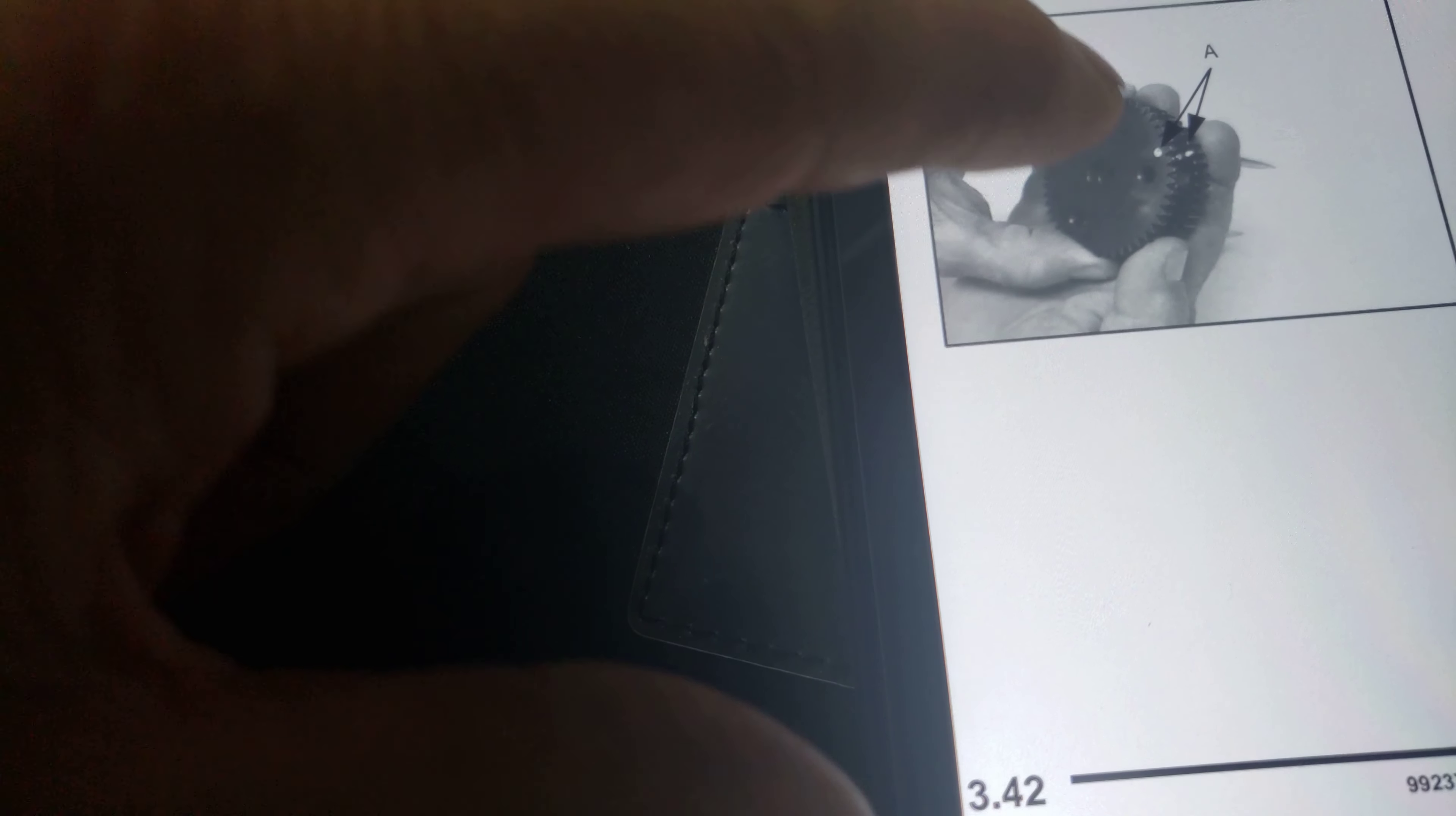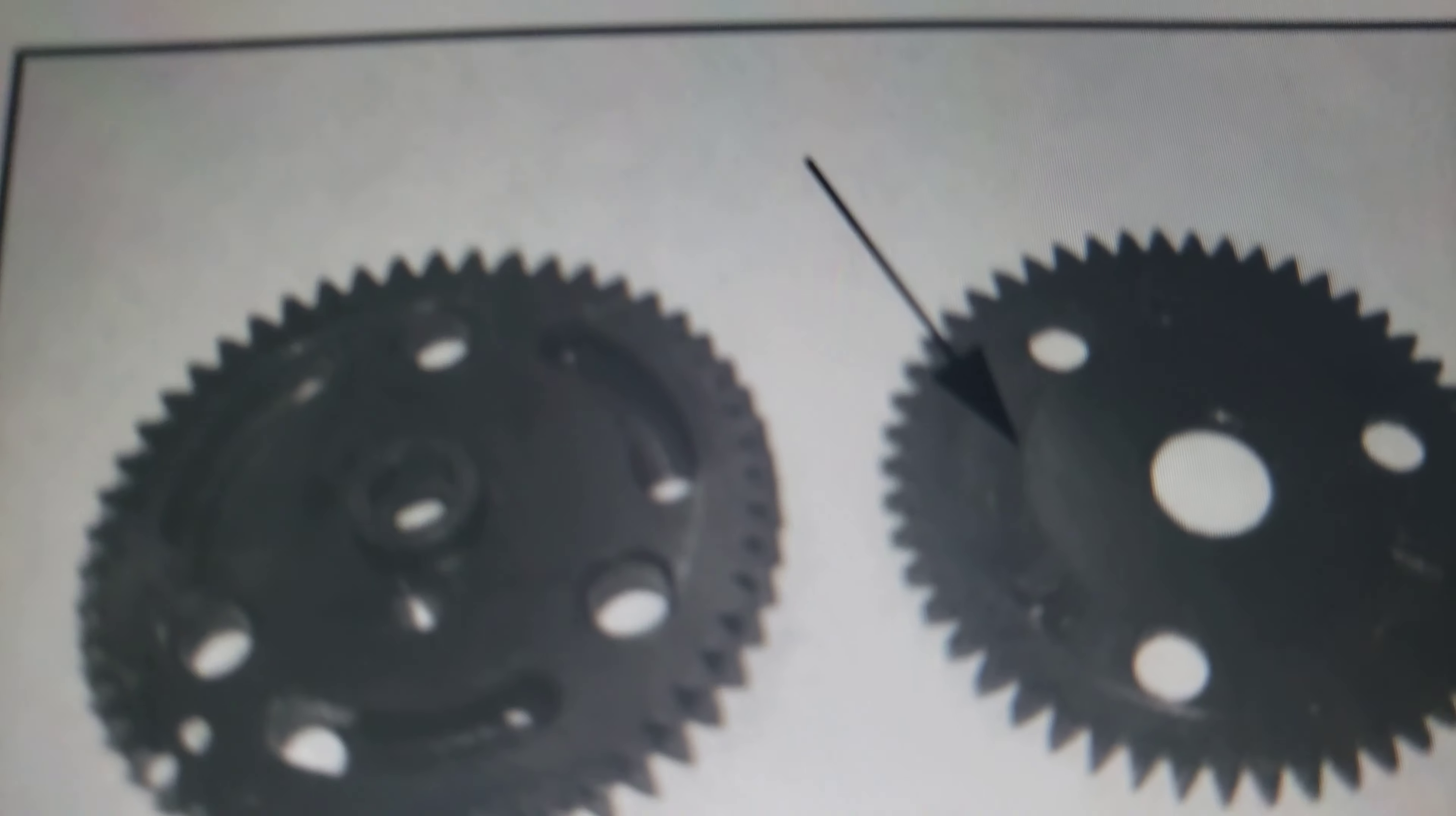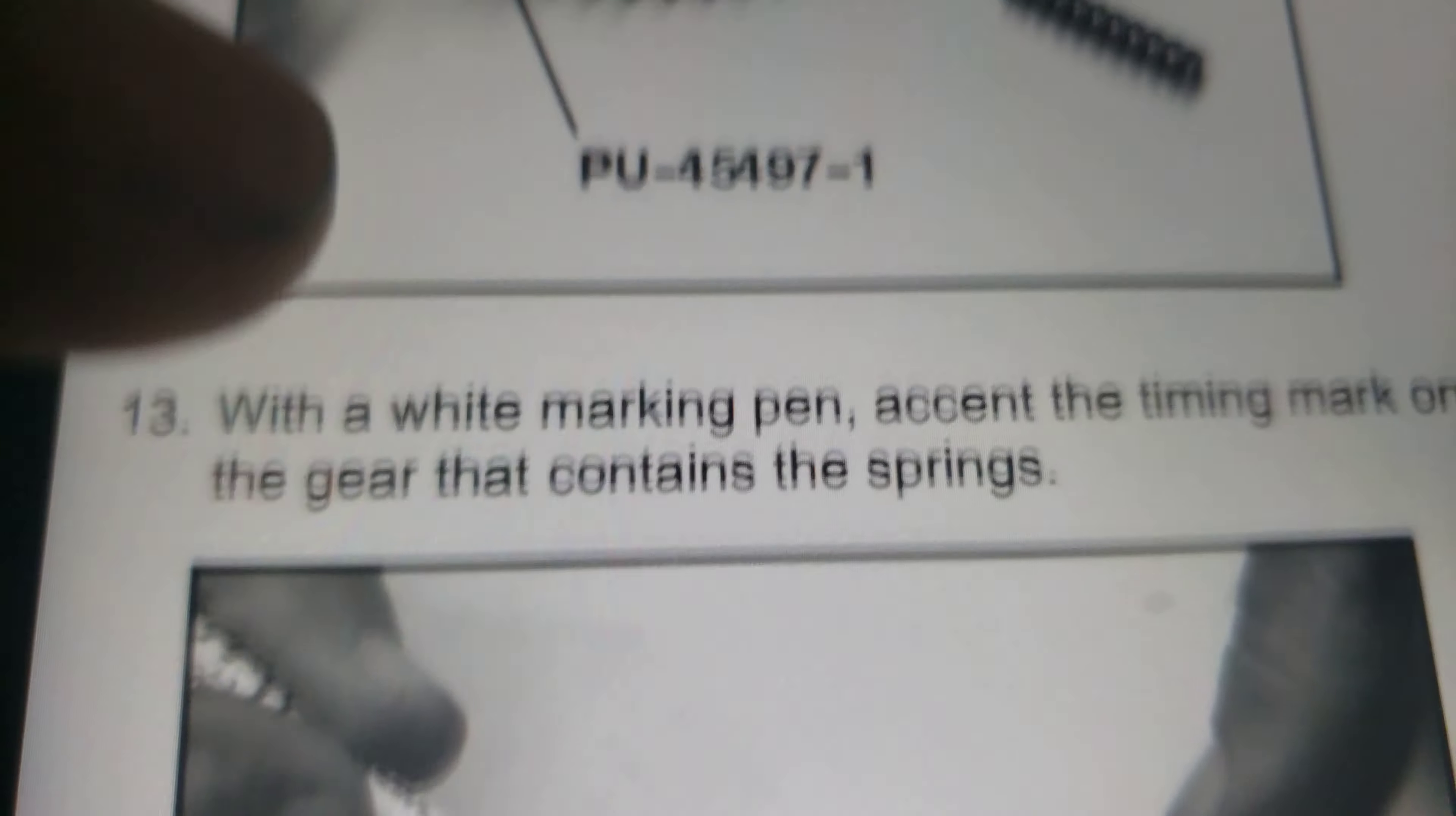See here where it says put the two dots together when you're putting this thing together? Because this will have little slots that go in these springs, and you'll know if you have one, you'll see. You can kind of see it there. See, it has little tabs on it and those little tabs go through here with the springs in there.